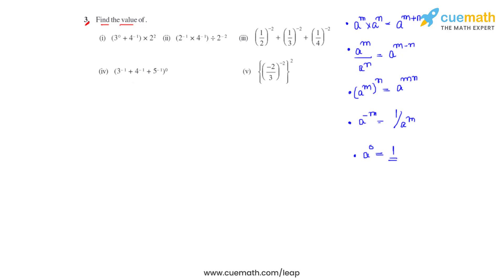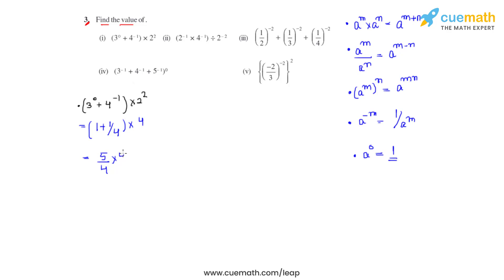Now let's solve each of the given bits. The first one says 3 raised to 0 plus 4 raised to negative 1 times 2 raised to 2. So 3 raised to 0 equals 1, and 4 raised to negative 1 is 1 over 4, times 2 squared which is 4. That gives us 1 plus 1 over 4 times 4, the 4s cancel, and we get the answer as 5.